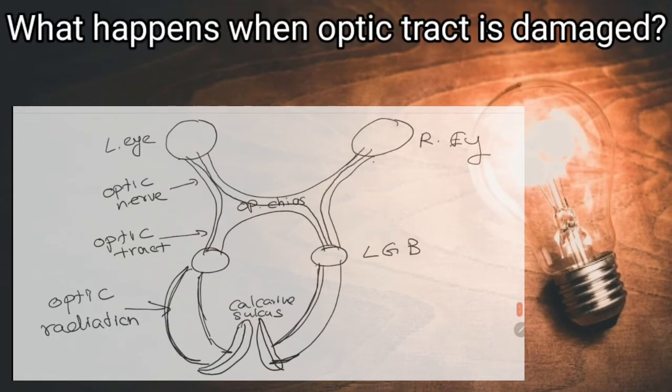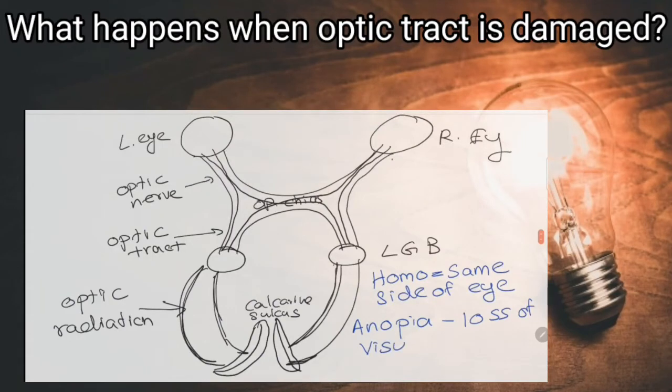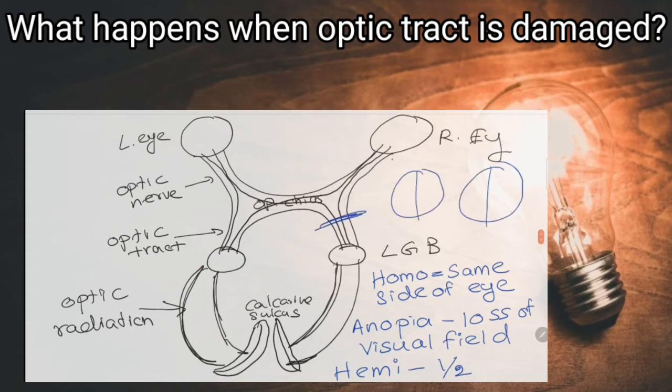What happens when the optic tract is damaged? If the optic tract of the left side is damaged, right-sided homonymous hemianopia occurs. And if the right-sided optic tract is damaged, left-sided homonymous hemianopia occurs.